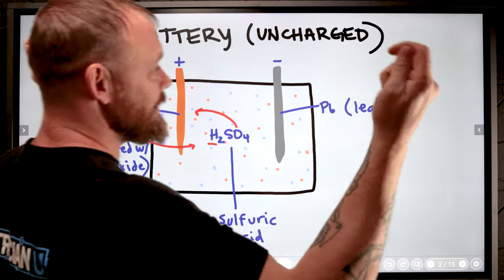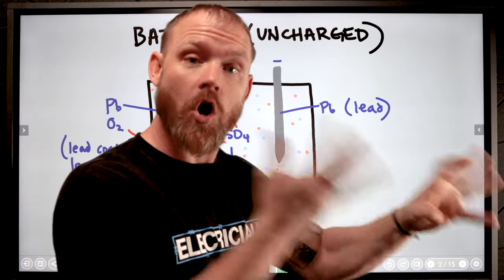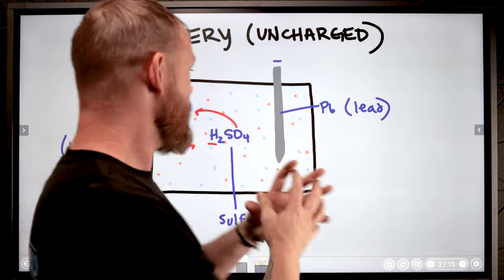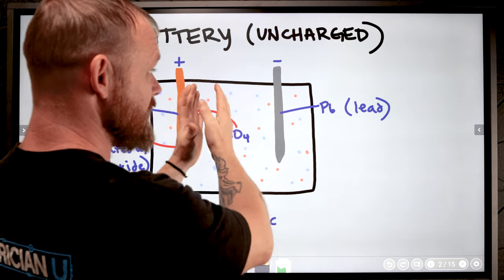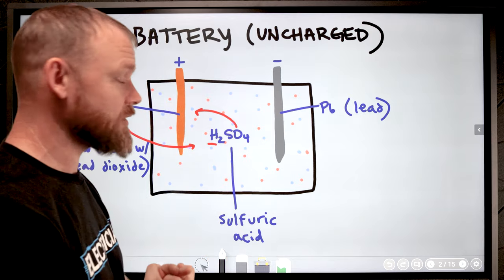As we add an AC power source, alternating current, to charge this battery to get it to have a difference of potential, we need to stack a bunch of negatives on one side and a bunch of positives on the other side.